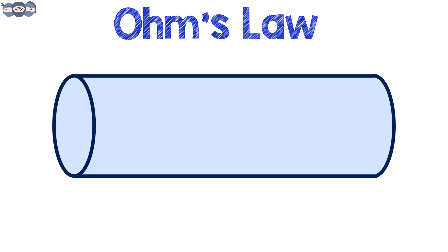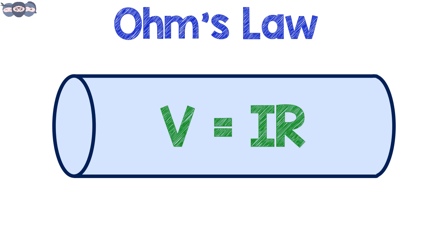Mathematically, it is written as V equals I into R, where V is the voltage and I is the current.